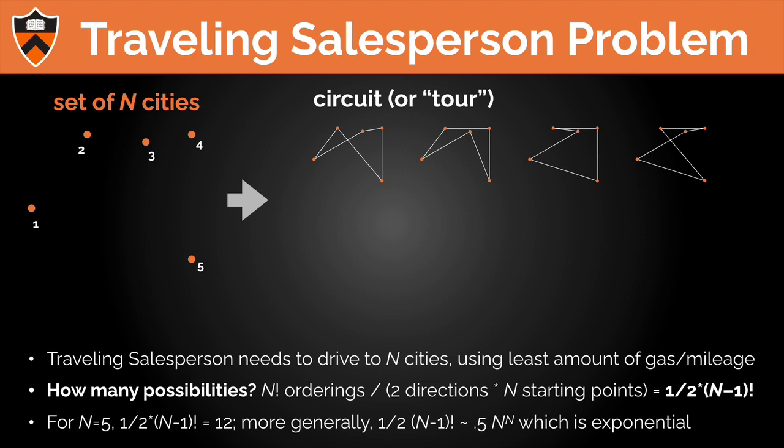How many possible solutions are there? With five cities I've already found four tours, but there are more. The number of possible solutions is all the permutations — N factorial orderings of the cities — divided by two for direction and divided by all possible starting points. Overall, we have one divided by two times (N-1) factorial, which using gross approximations is on the order of N to the exponential N. There are some other factors, but it's about that order — exponential in nature.